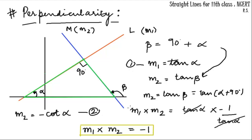Since alpha + 90° is in the second quadrant, it becomes negative, and because it is 90° and not 180°, tan becomes cot. So m2 = −cot α. Multiplying m1 and m2, we get tan α × (−1/tan α), which gives m1 × m2 = −1. You don't need to reproduce the full derivation, but you should know it so you can derive the formula if you forget it. Simply remember: m1 × m2 = −1.